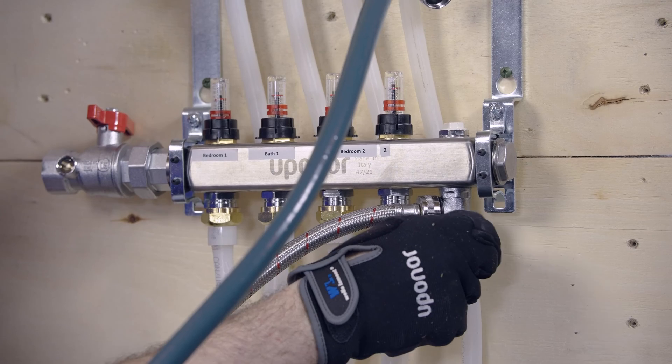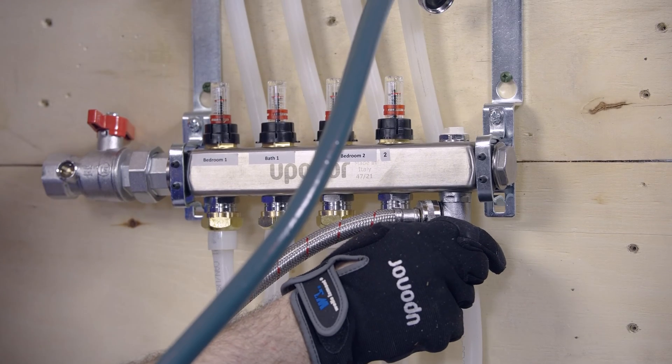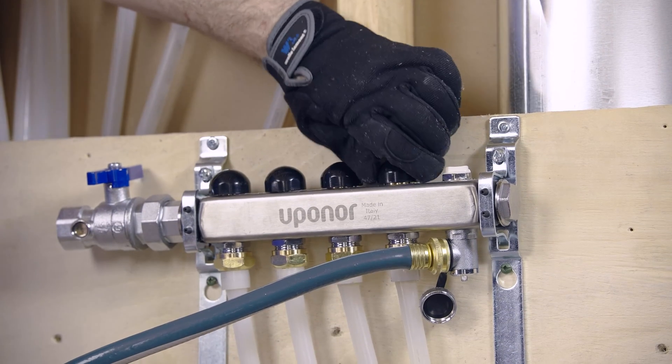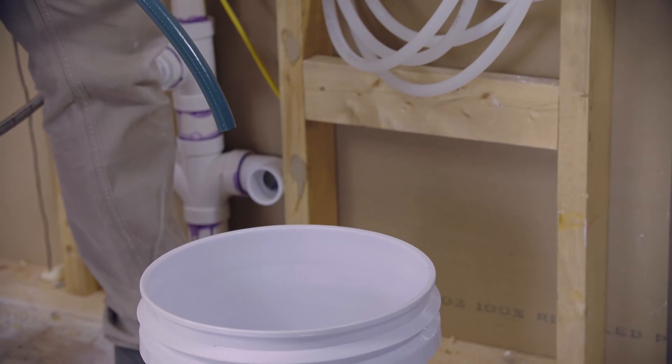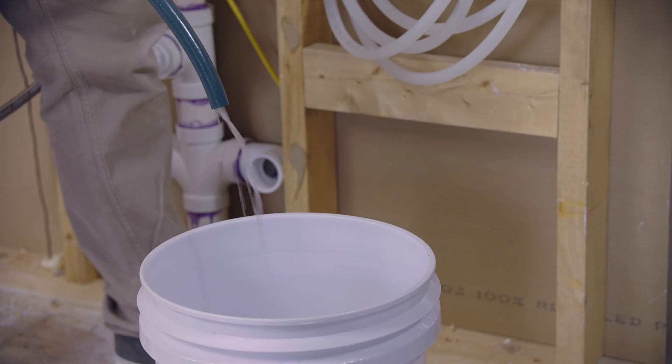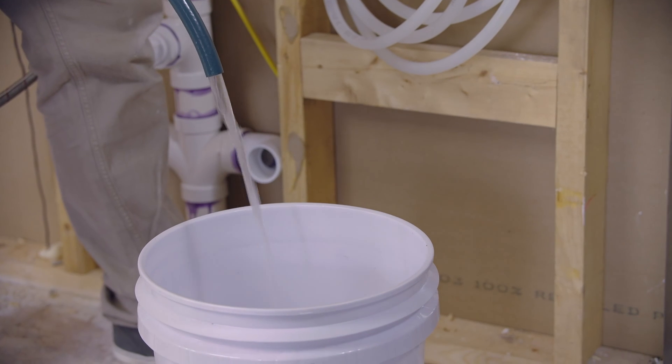Next, turn on the water to the hose and open a single loop. This will fill both the manifold chamber with water and start filling the loop. Water will eventually begin to flow through the drain hose. Allow the water to flow until all the air is purged from the loop.